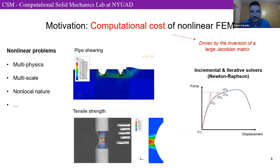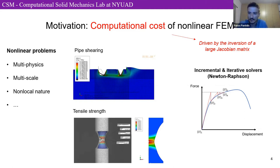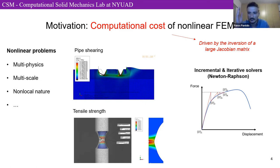The motivation is simple: non-linear FEM analysis takes a lot of time, and this expense is prohibitive especially in industry. Parameters such as multi-physics, multi-scale, non-local problems, fine discretization, material and structural failures all increase the nodal degrees of freedom vector significantly, because you have to account for all additional governing PDEs.